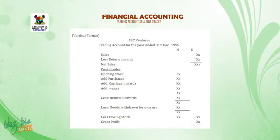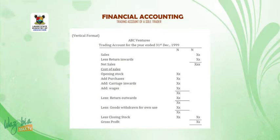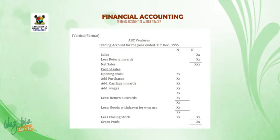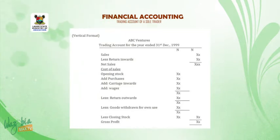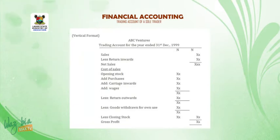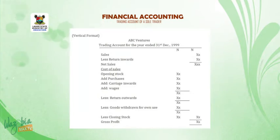We will now have cost of sales. Under it, we have opening stock, to which we add purchases, carriage inwards, and wages — all under the first naira sign to get a subtotal. We will then less return outwards, less goods withdrawn for own use, and less closing stock. The figure we get is our cost of goods sold, which is deducted from our net sales to get our gross profit. If cost of goods sold is greater than net sales, then we get our gross loss.